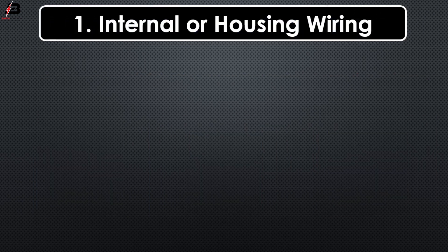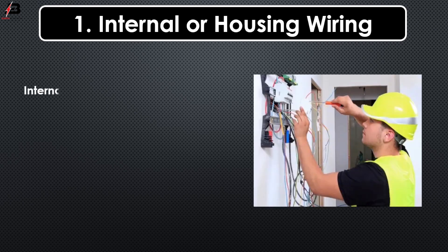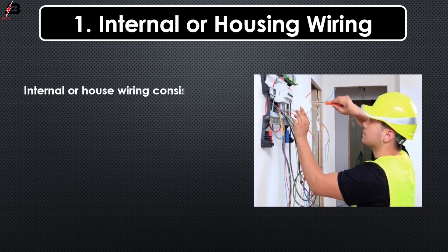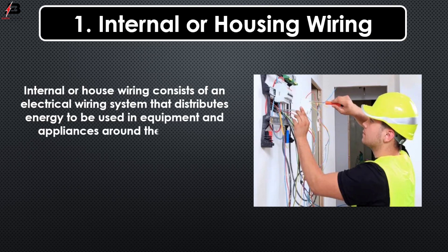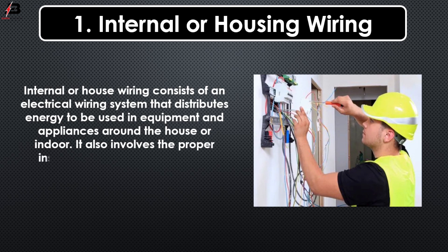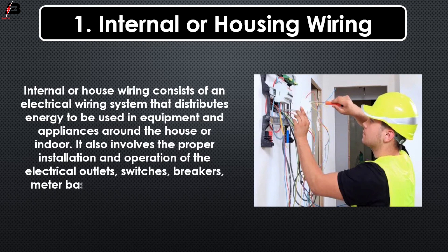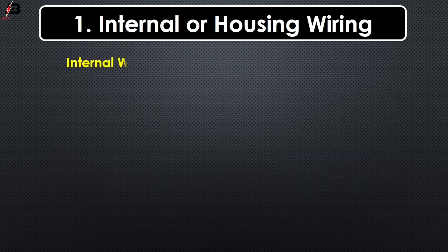Internal or housing wiring consists of an electrical wiring system that distributes energy to be used in equipment and appliances around the house or indoors. It also involves the proper installation and operation of electrical outlets, switches, breakers, meters, bays, and different electrical circuits.